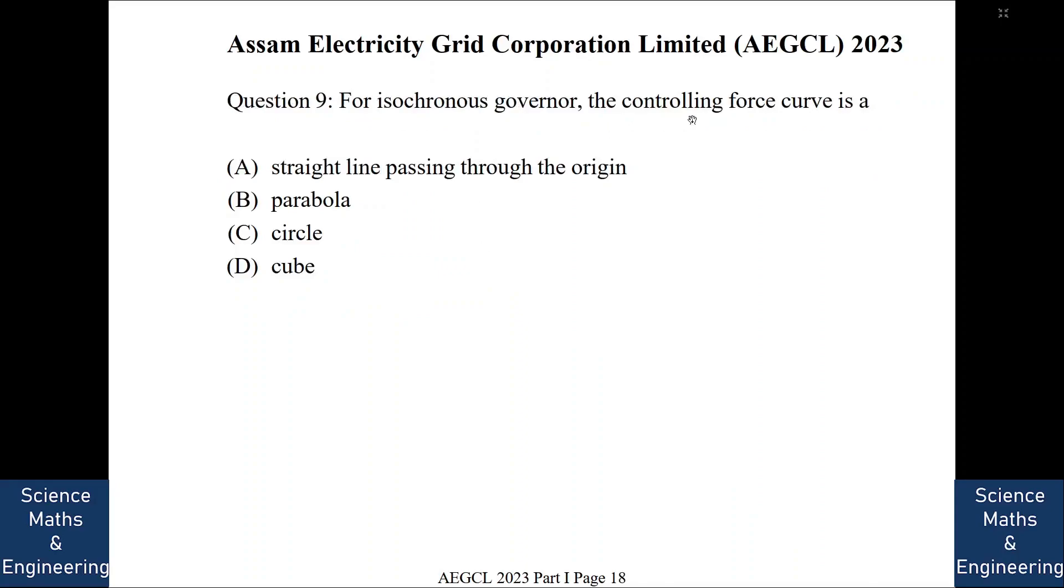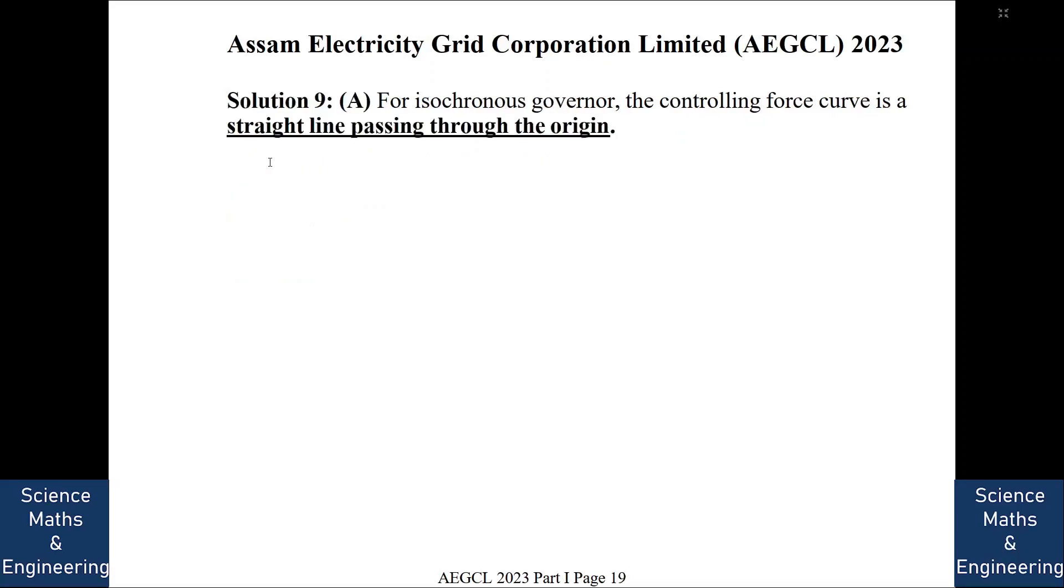For isochronous governor, the controlling force curve is A. So if it is the isochronous governor, the controlling force is a straight line passing through the origin. We'll go to the next question.